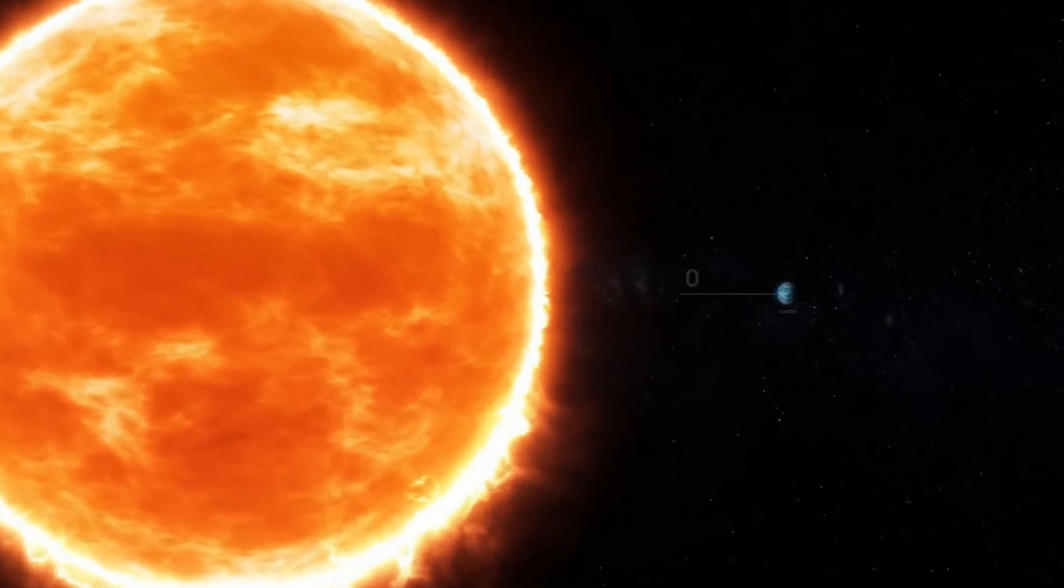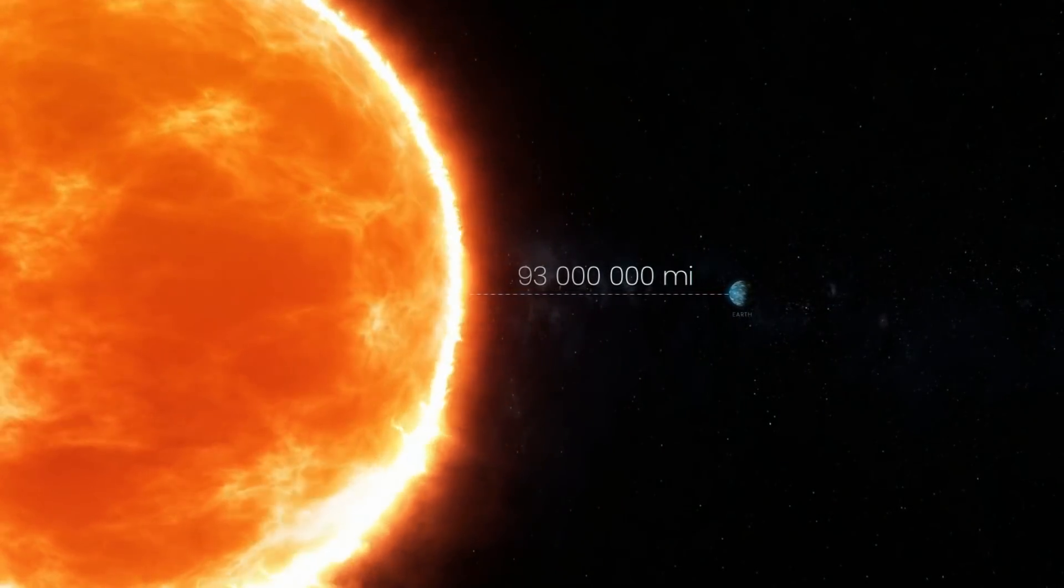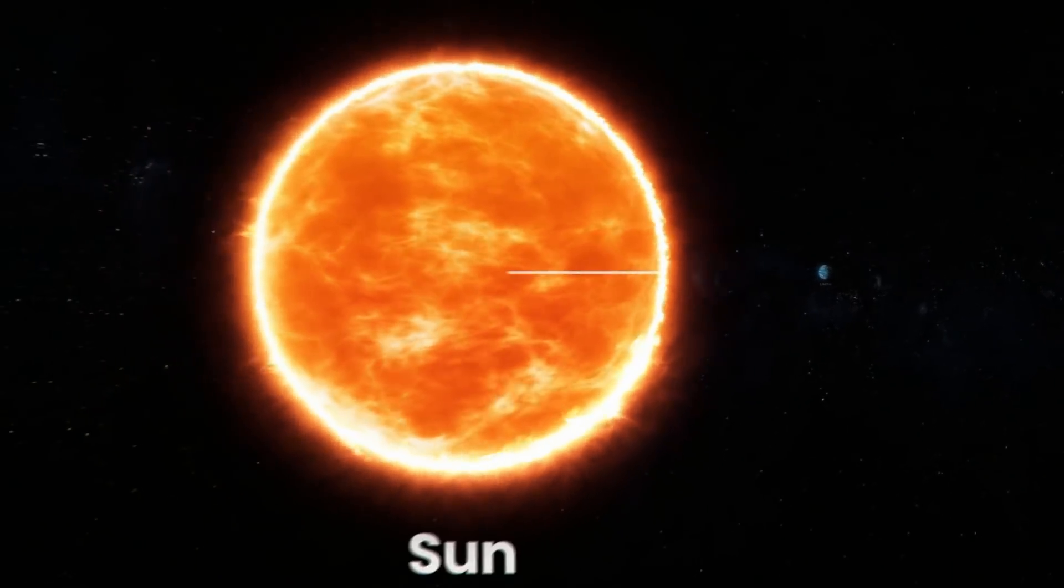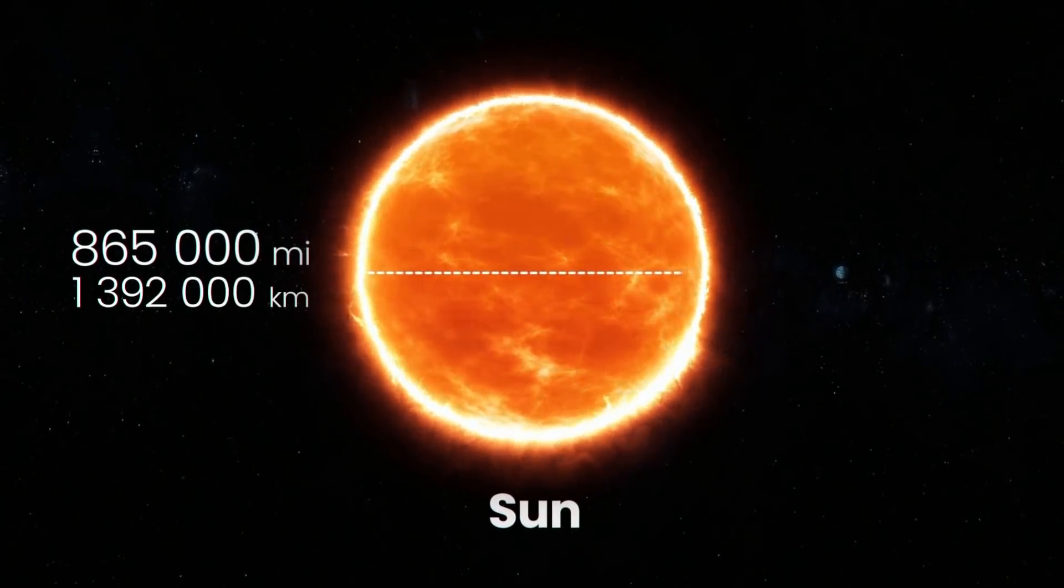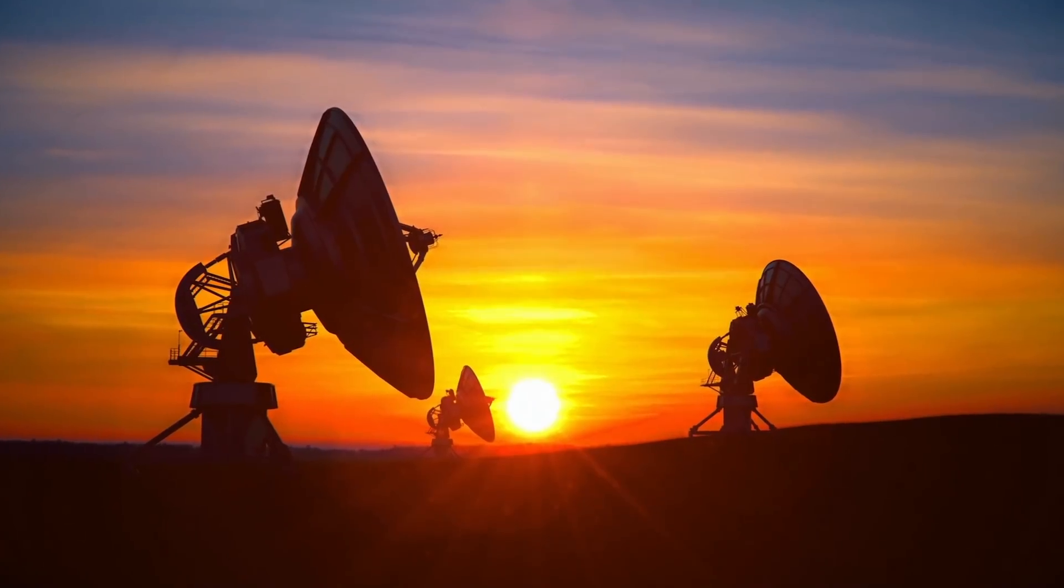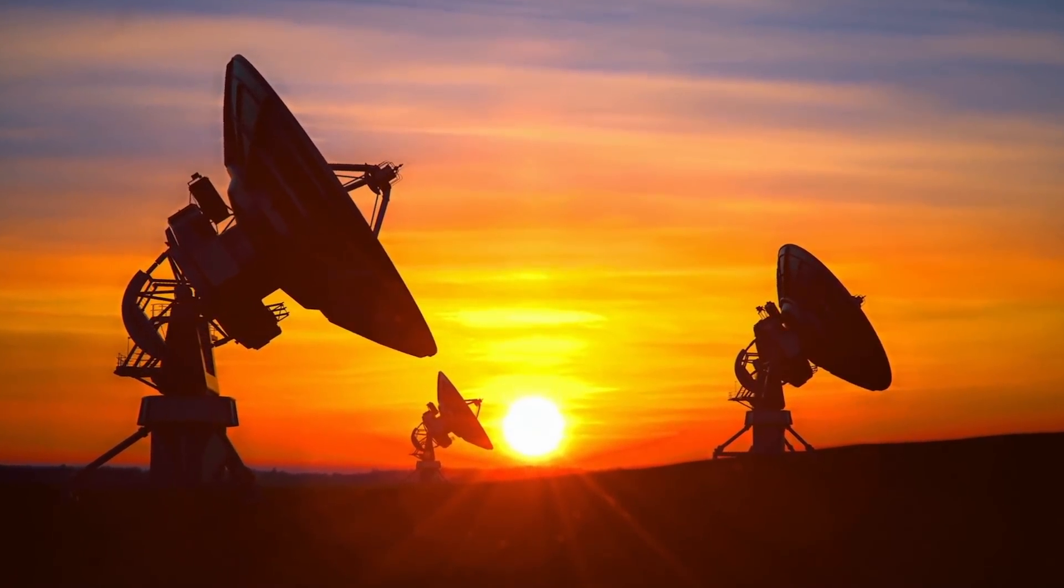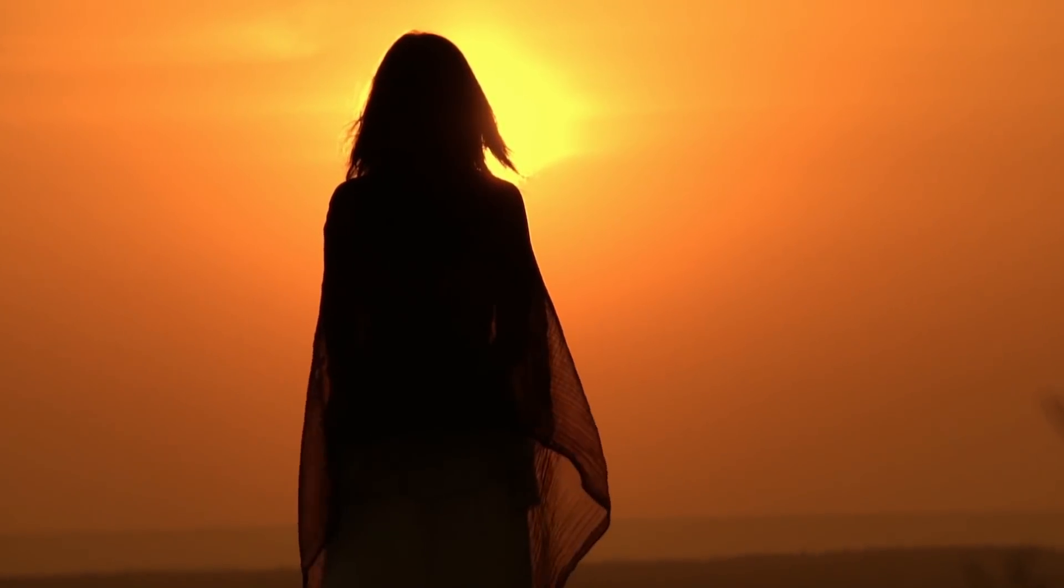The Sun is 93 million miles away from us and measures a staggering 865,000 miles across, big enough to fit 1 million Earths inside. It has been studied with great interest for thousands of years, and yet we know very little about it.